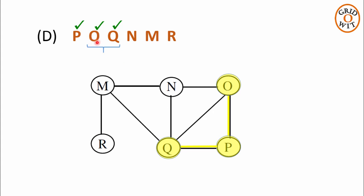We will see which nodes are the direct neighbors of node O which are not traversed yet. P is traversed, Q is already traversed, and node N is not traversed — it is a neighbor of node O, so it should be traversed next. And yes, the next node in the traversal sequence is node N and it can be traversed. Now we have traversed the neighbors of node P and node O. We will see which nodes are the direct neighbors of node Q which are not traversed. P is already traversed, O is already traversed, N is already traversed, but M is not traversed — it is a neighbor of Q, so it should be traversed next. And yes, in the traversal sequence, next node is M and it can be traversed.